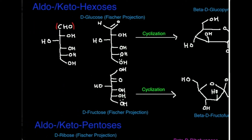In a previous video, we went over Fisher projections and Haworth projections of carbohydrates. Haworth projections are shown here on the right side of your screen, and Fisher projections are on the left. I'm going to assume you already have knowledge of those; if not, go back and watch that video. We're going to go from the Fisher projection, which is the linear form, cyclized to a Haworth projection.